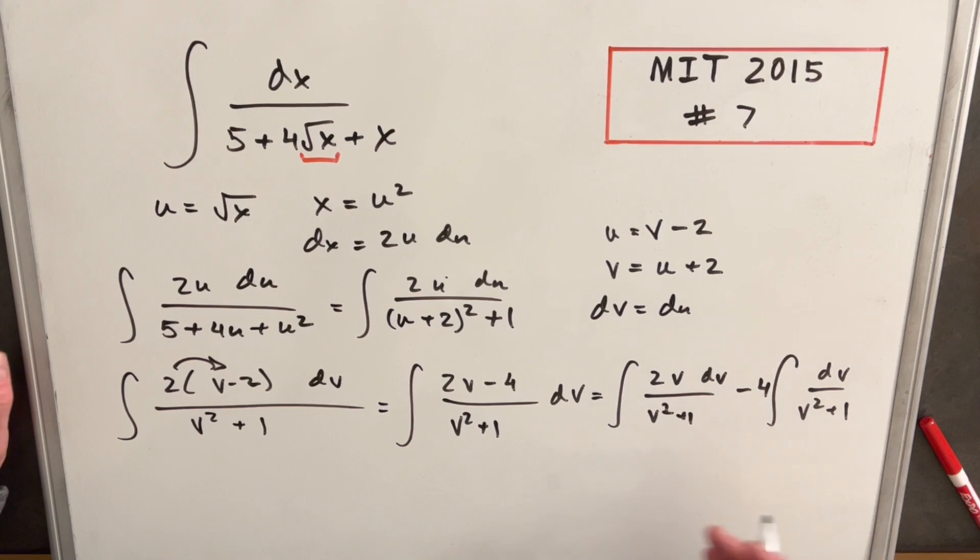And both these, like I said, are pretty easy. The derivative of v squared plus 1 is 2v dv. So this is going to work nice. And then this is just going to be arctan. So we'll integrate this. And we're going to have, for the first one, natural log of v squared plus 1. We don't need absolute value because this is always positive. And we'll have minus 4 arctan, or inverse tan, of v plus c.